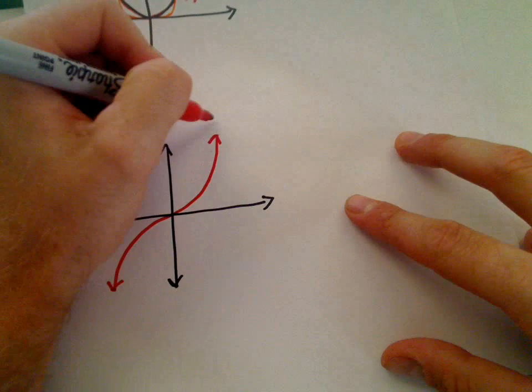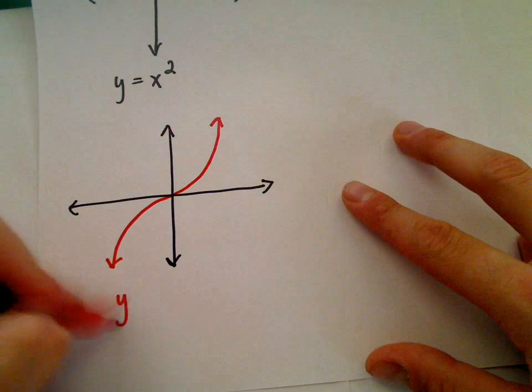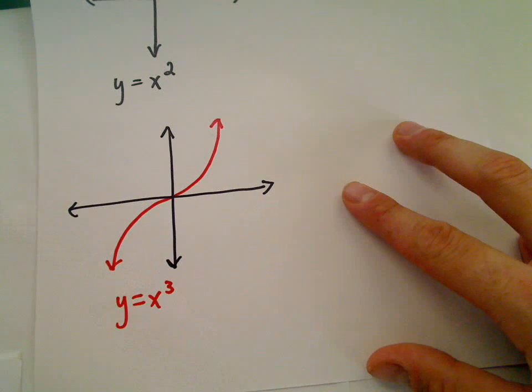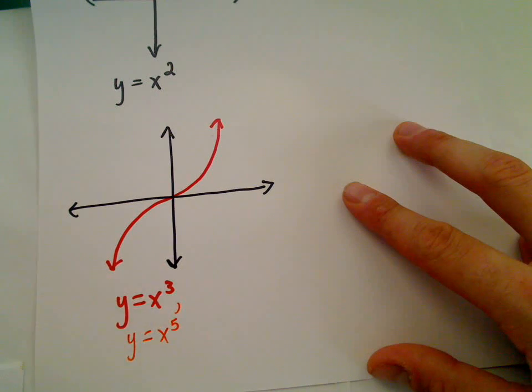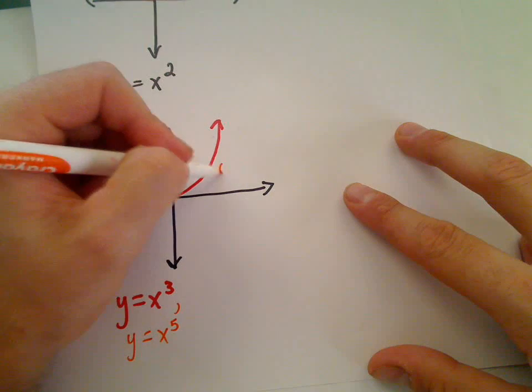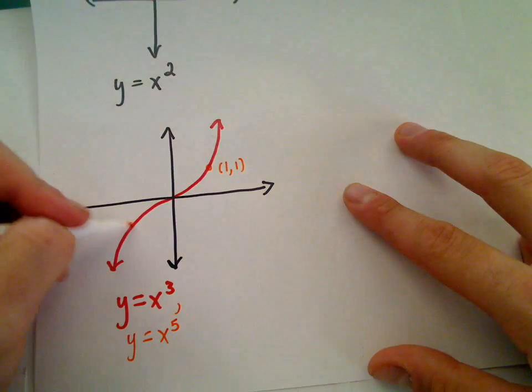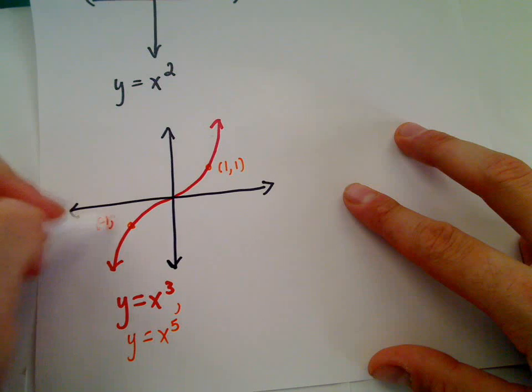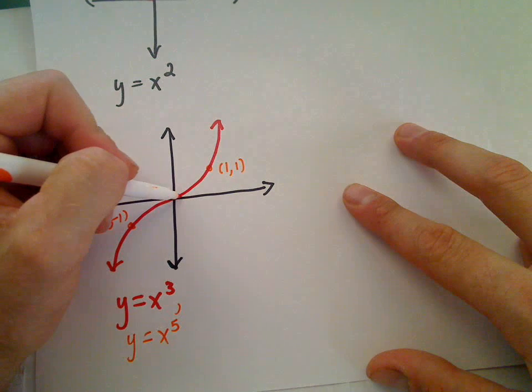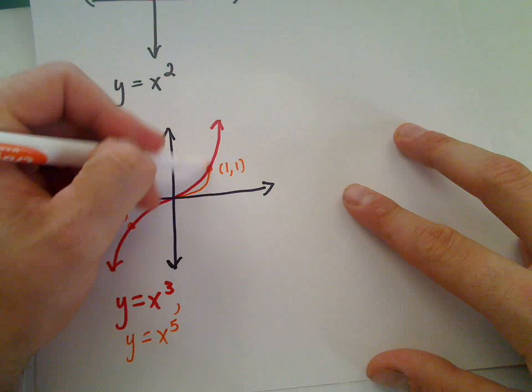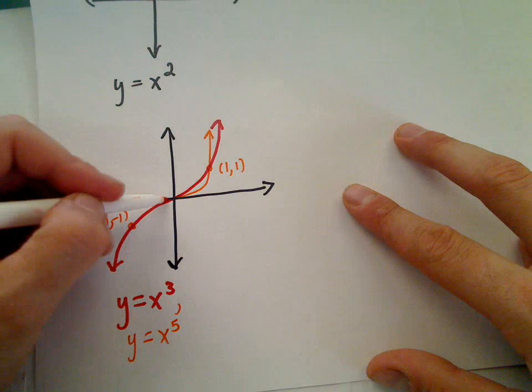Here's the graph, for example, y equals x to the third. Likewise, if we graph y equals x to the fifth. Notice that both of these graphs will go through one, one, and also negative one, negative one. If the power is higher, it's going to do the same thing. It's going to be a little flatter, but then it'll become steeper after that.